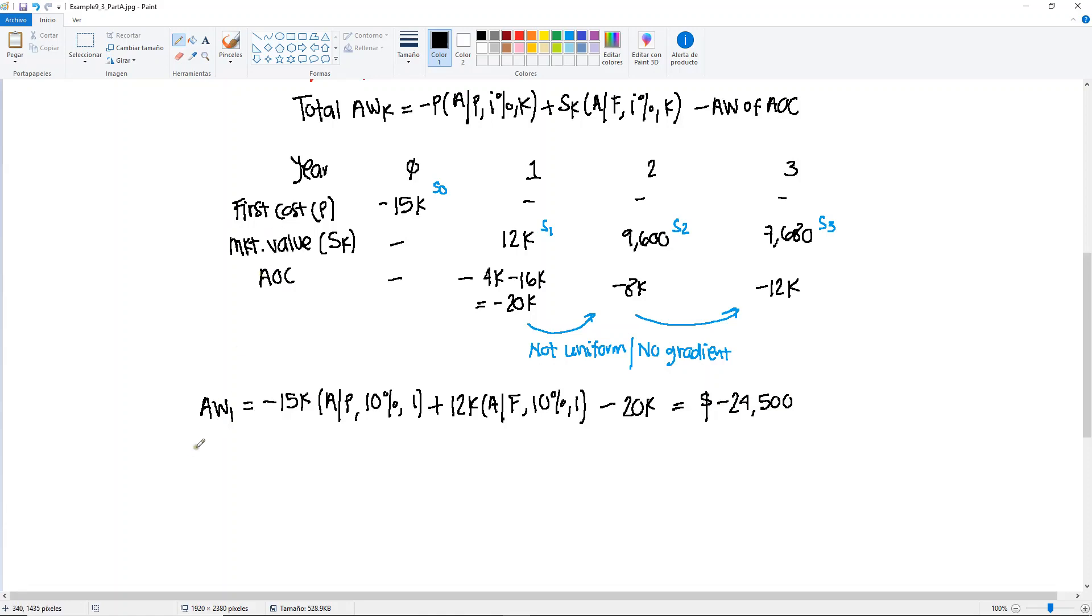Now let's go ahead and calculate the annual worth of the second year. Minus $15,000 for your first cost. Let's find A given P, 10% for two years, plus whatever we have for salvage value in year two, $9,600, find A given F, 10% for two years. And then here's where we have the situation where there's no pattern and we have two values, one in each year.